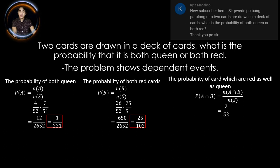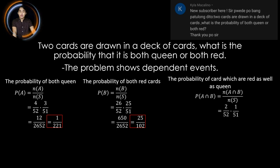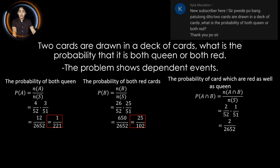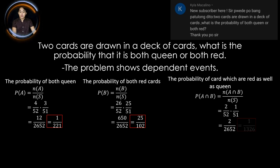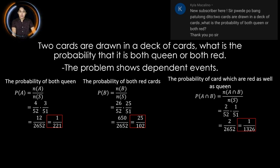For the second draw, there is only 1 over 51. Multiplying the results, we have 2 over 2,652. Reducing to lowest terms, that is 1 over 1,326.